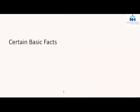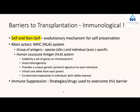Before we start, there are certain basic facts that we need to know. In transplantation, immunology is king. Every other issue that is there is potentially solvable, and there has been significant improvement. But the key issue about long term outcomes is to do with immunology - something that we still do not clearly understand. We are barely tinkering at the periphery. So the biggest barrier to transplantation is immunological.